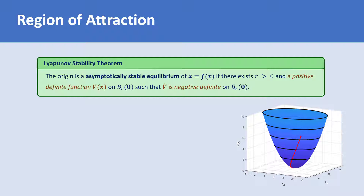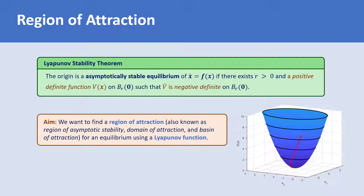This set is called the region of attraction, and is also known as the region of asymptotic stability, domain of attraction, and basin of attraction. We will learn in this lecture how to use a Lyapunov function to find the region of attraction for an equilibrium.